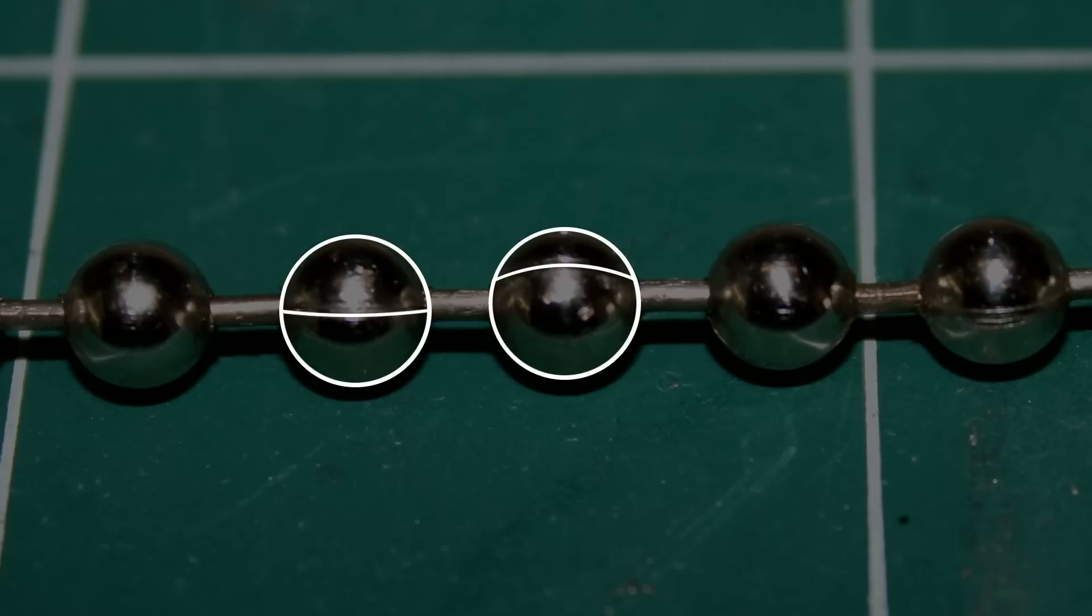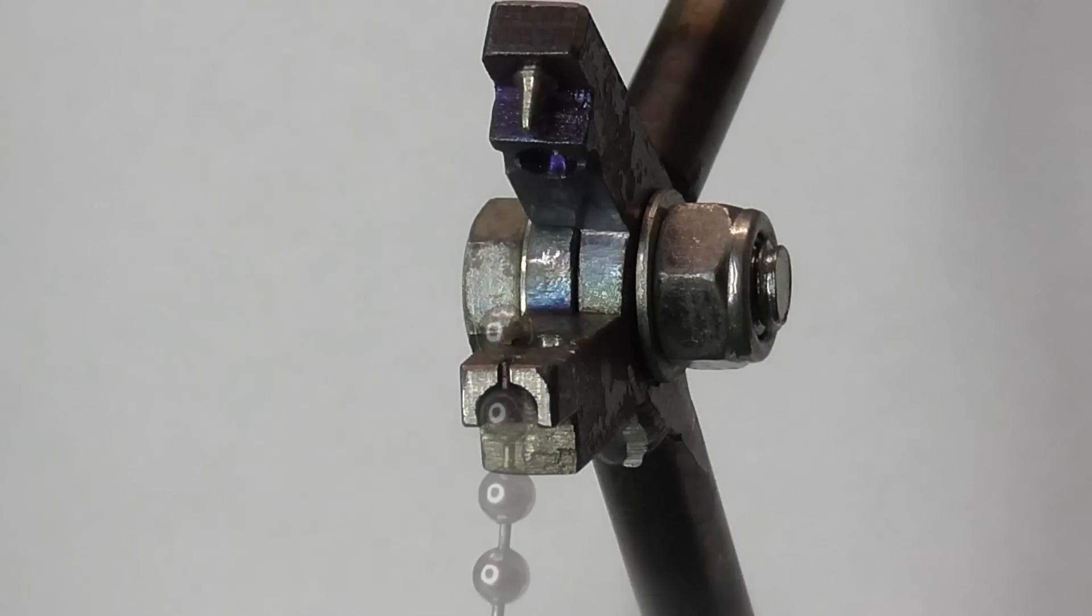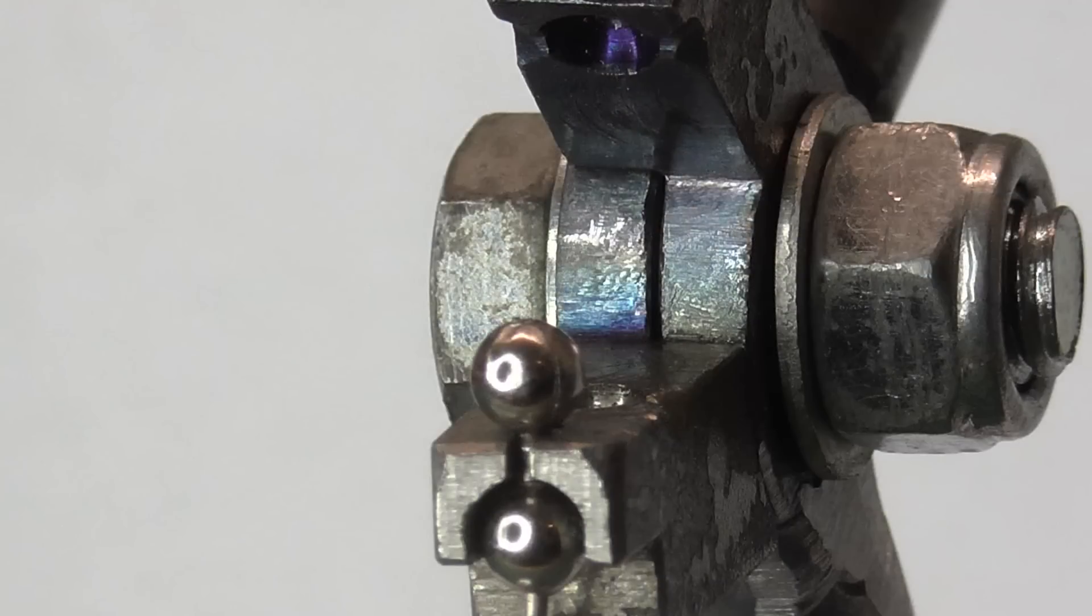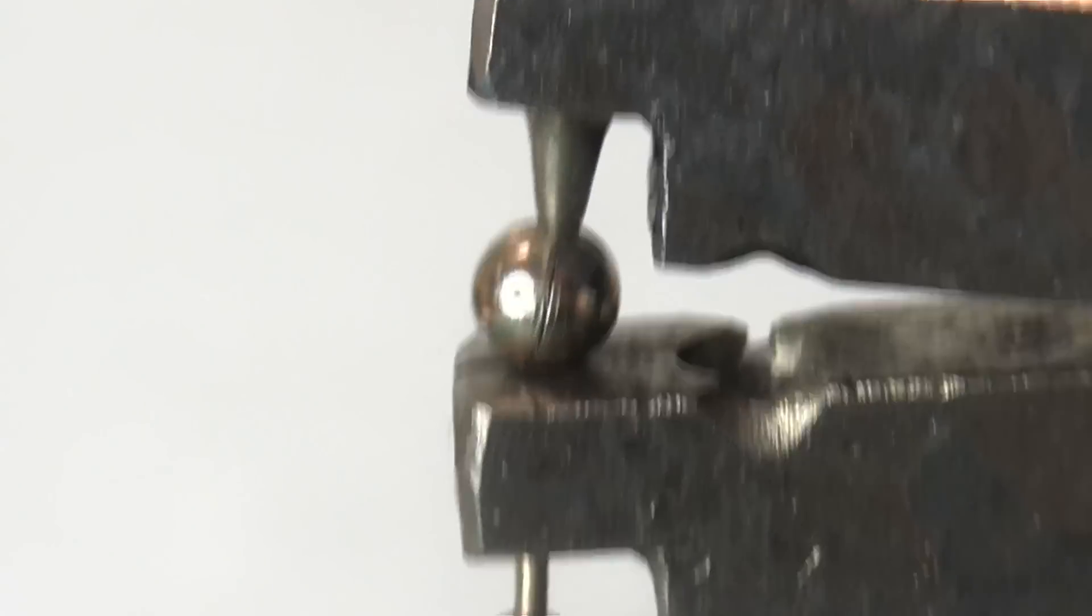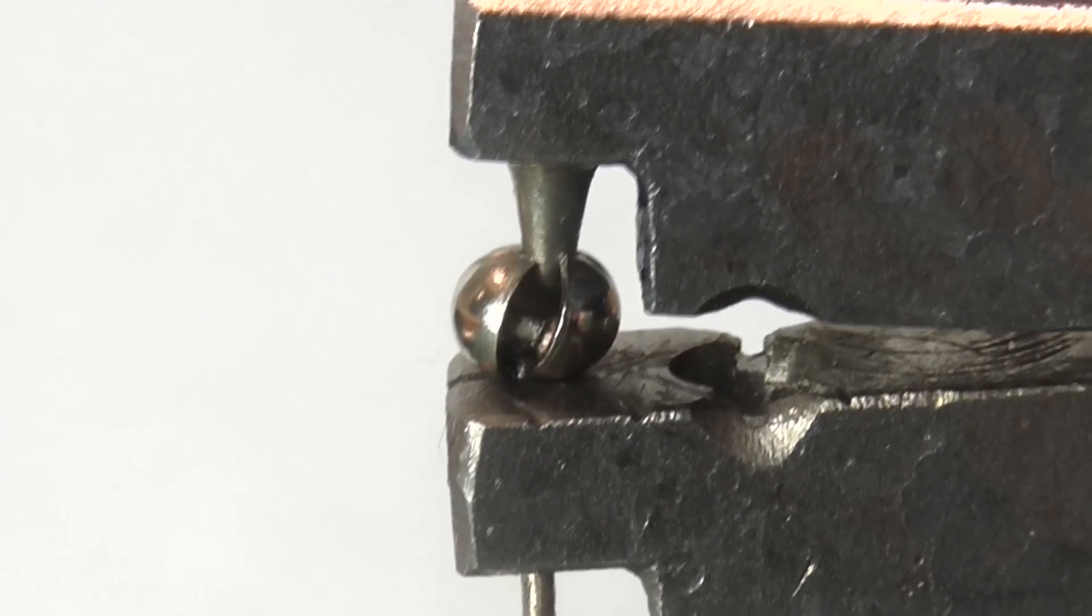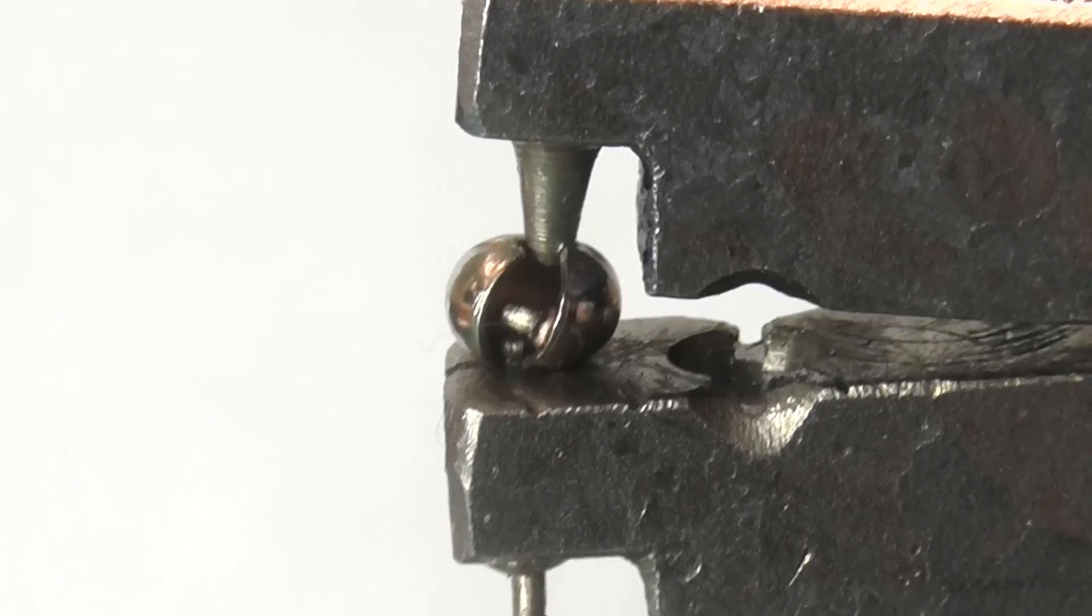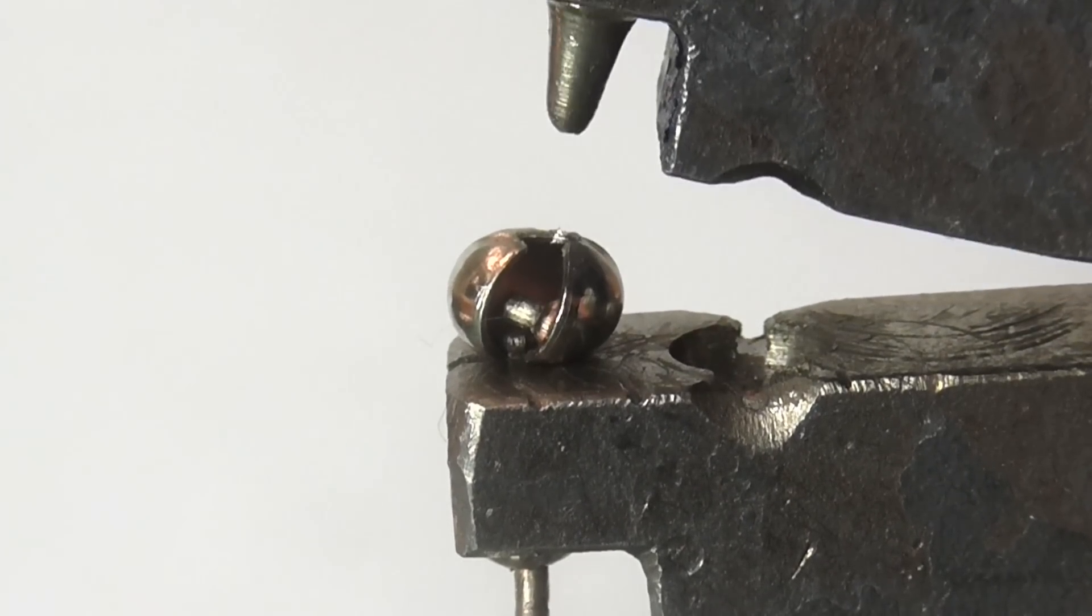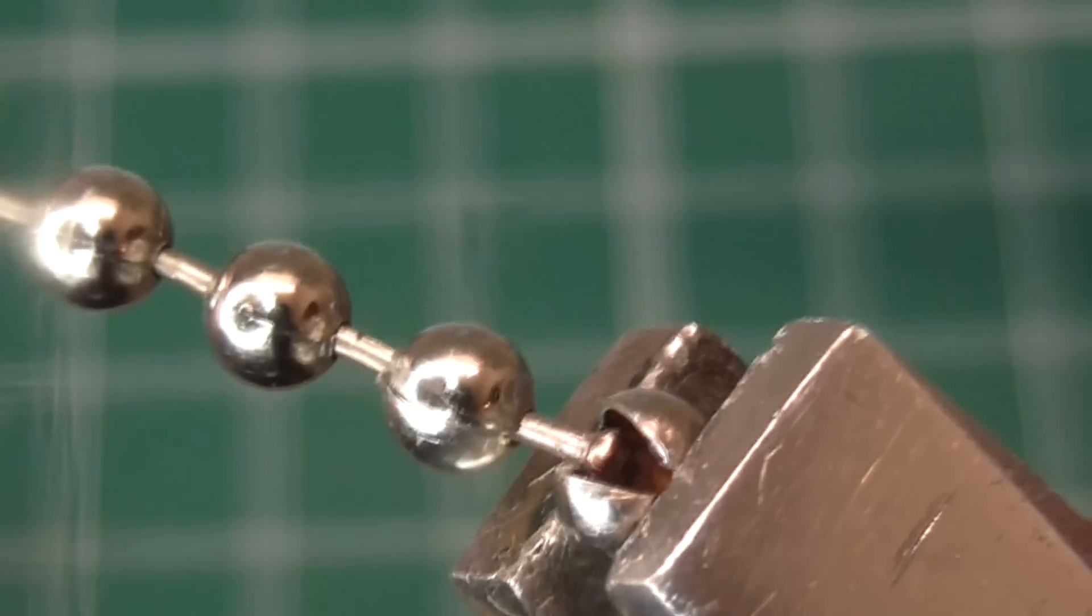The beads have a seam along the side where they are crimped together. The spike forces the bead open. It can then be removed along with the cut in half dumbbell, exposing the end of the next complete dumbbell.